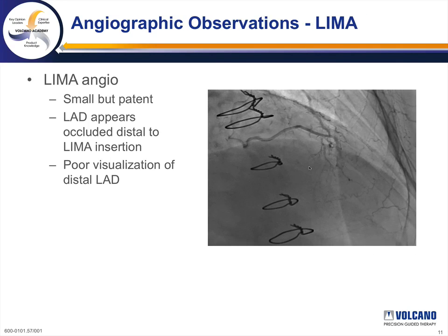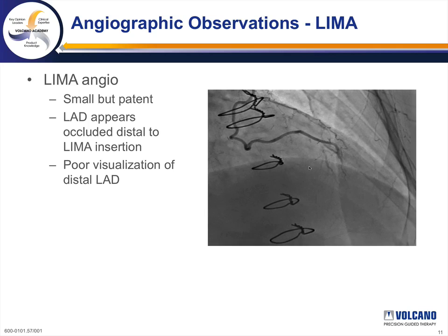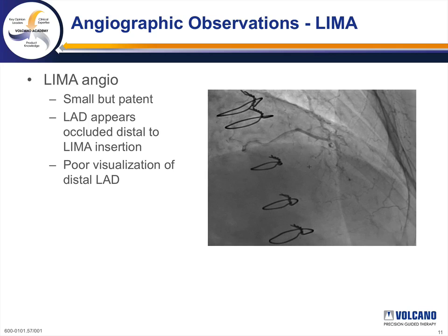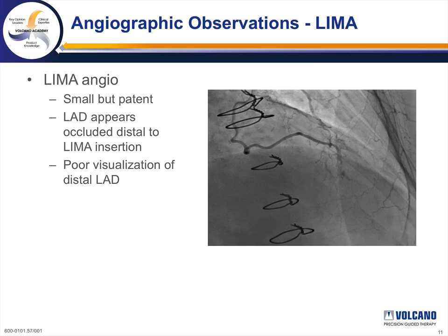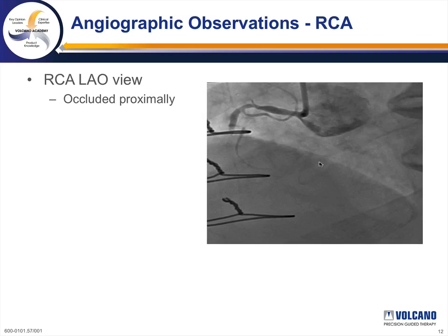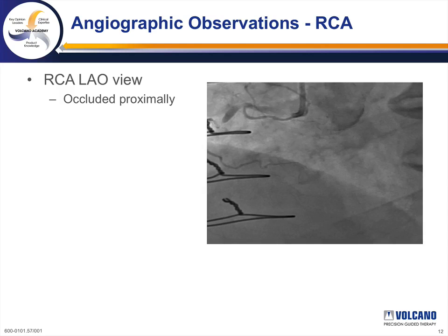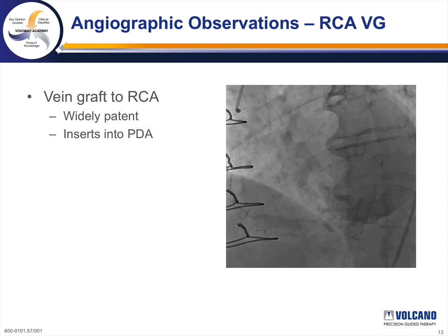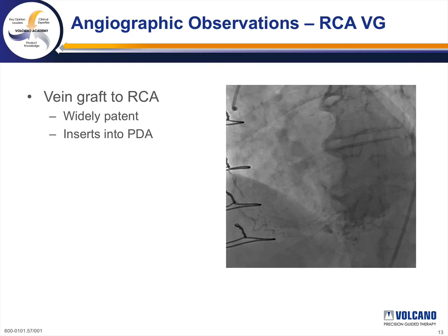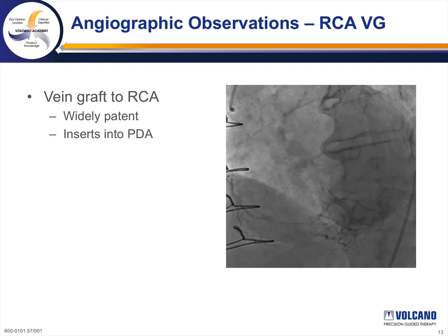Injection of the left internal mammary artery shows it to be small but patent, inserting into the mid-LAD but appearing to supply only a very short segment of the LAD before a more proximal and distal occlusion. The distal LAD is very poorly visualized. Injection of the native right coronary shows it to be occluded after the shepherd's crook. The vein graft to the right coronary is widely patent, inserting into the posterior descending artery, which appears diffusely diseased distally, as does a small posterior lateral branch.